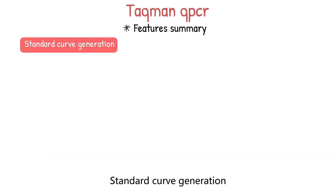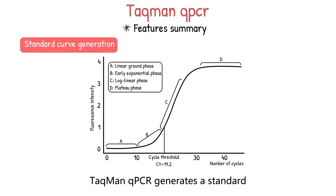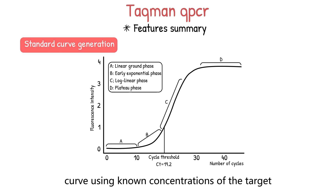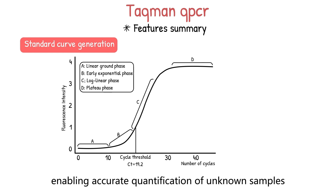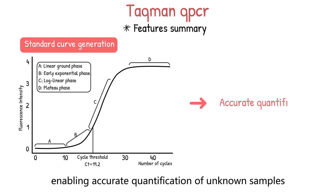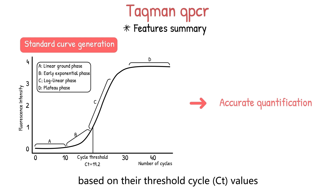Five is standard curve generation. TaqMan qPCR generates a standard curve using known concentrations of the target DNA sequence, enabling accurate quantification of unknown samples based on their threshold cycle values.